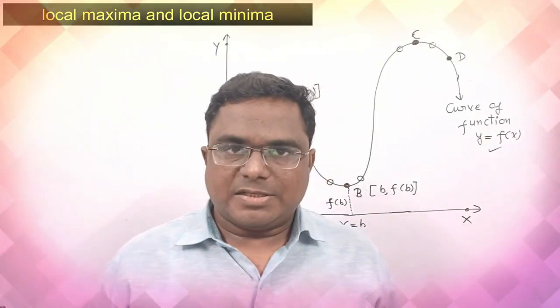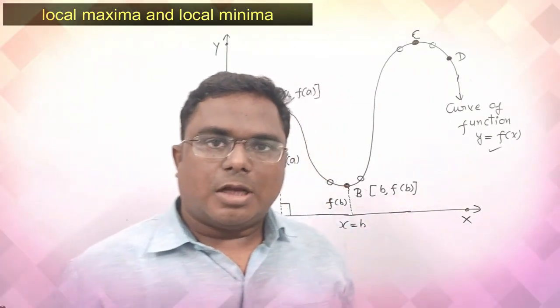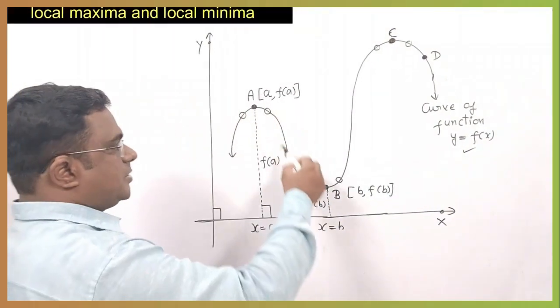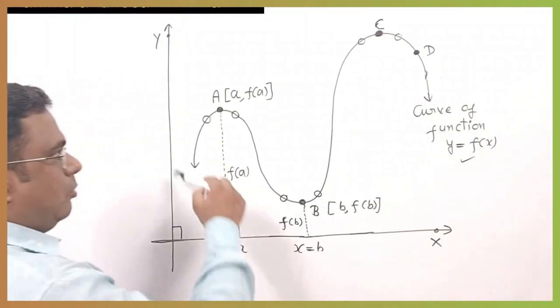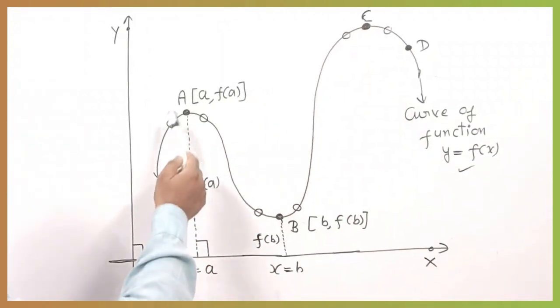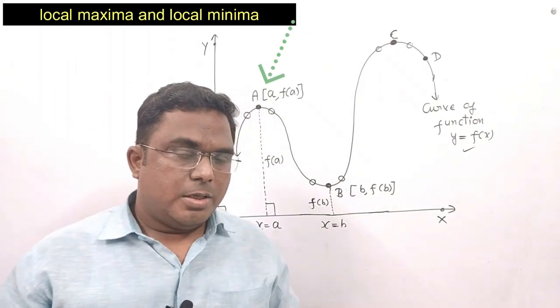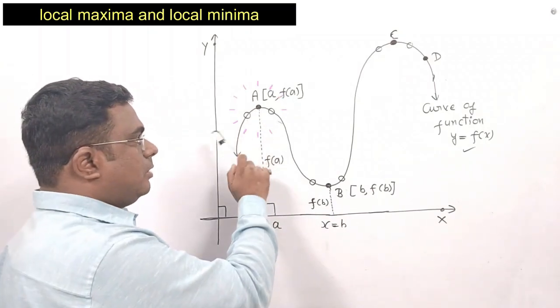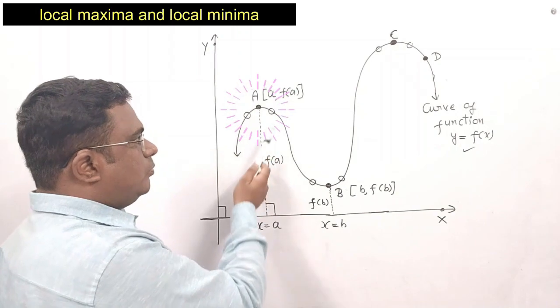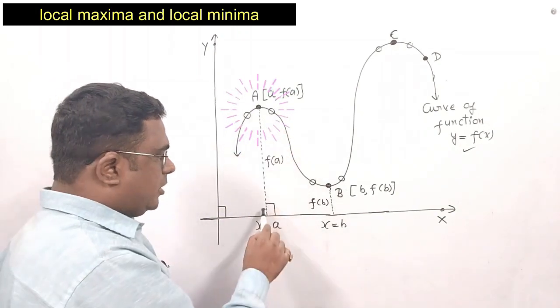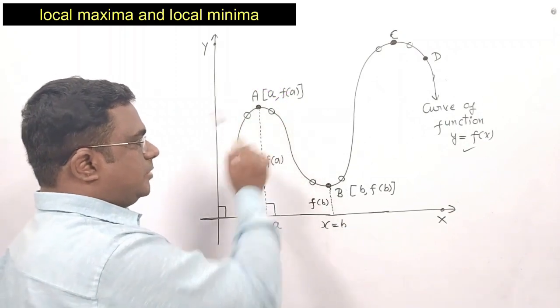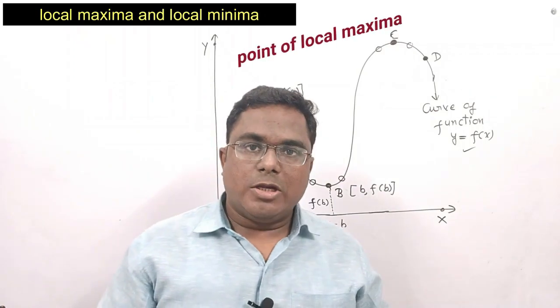If you have forgotten these topics, I advise all of you to please watch my videos on those topics and after that continue this video. Now we will understand the meaning of the word maxima. Let us consider the graph of some function y equal to f(x). On this curve, I have highlighted some points: a, b, c, and d. Point a is the highest point as compared to the points nearby to it both from left and right. So this point a is the highest point in its surroundings, and that's why we call it the point of local maxima.